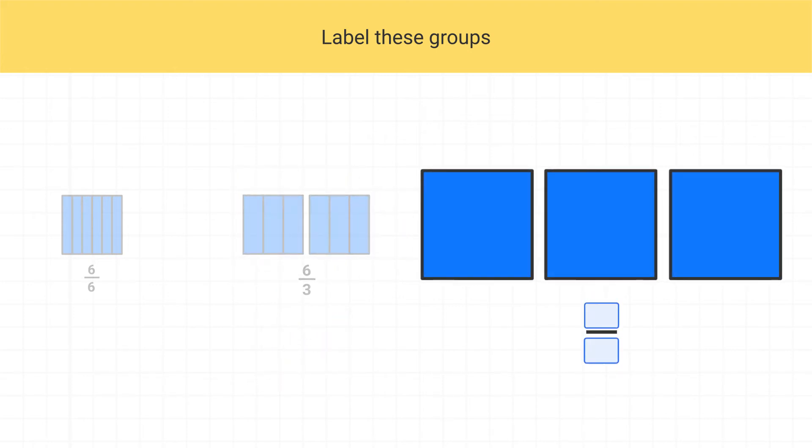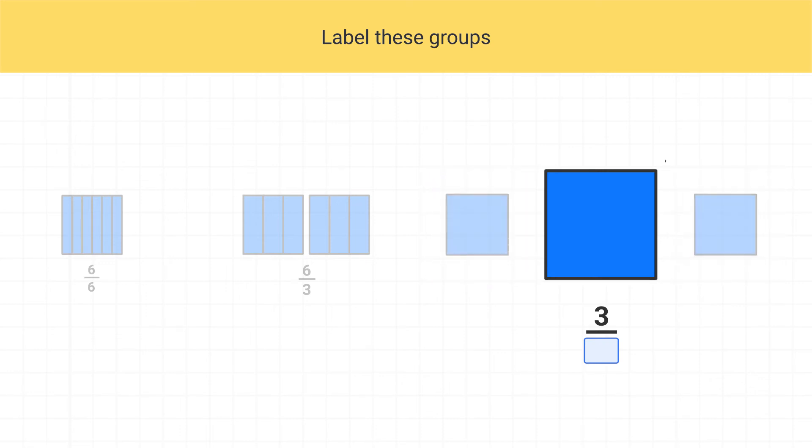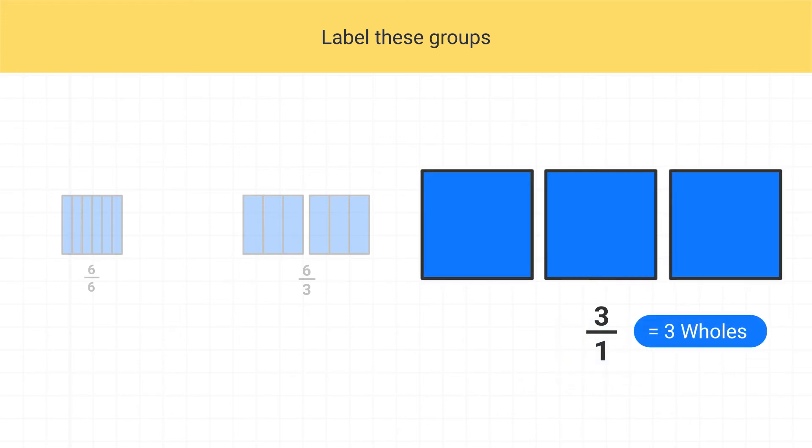Now finally, we have this last group where the squares are not split into pieces at all. Well, what should the numerator of our fraction be? Well, we'll think of each square like a piece, and we could count up that we have 1, 2, 3 shaded pieces, so our numerator is a 3. But what should our denominator be? Well, each piece is a whole square, and when we talk about whole fractions, we use a denominator of 1. This is 3 over 1, or 3 wholes.